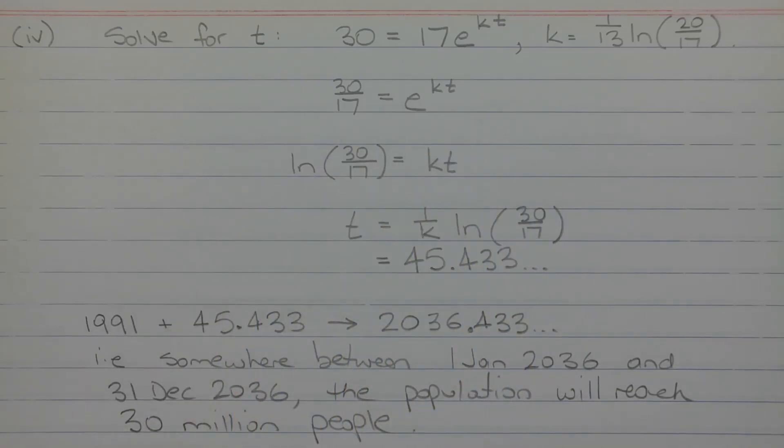This was a similar step that we did in part three. Isolating the T by dividing both sides of the equation by K, we get T is equal to 1 over K times LN of 30 over 17, or we can write it as LN 30 over 17 divided by K. Now we know the value of K in exact form. So evaluating this expression, we get 45.433 years. But we need to find the year in which the population reaches 30 million people. So starting with the year 1991 and adding on 45.433,